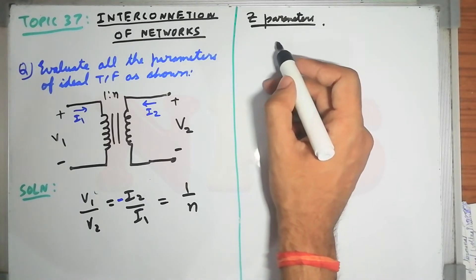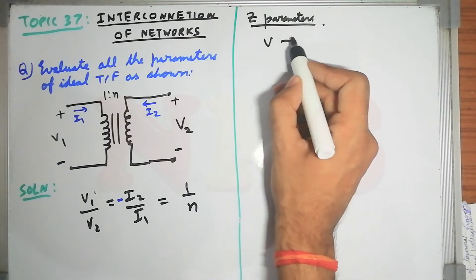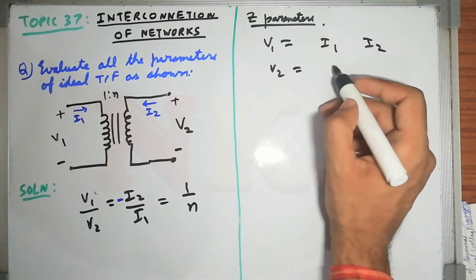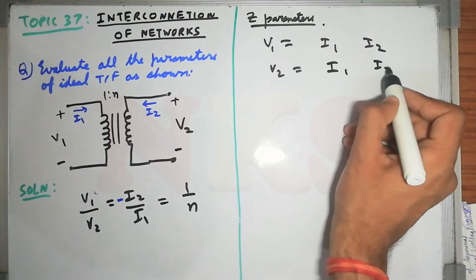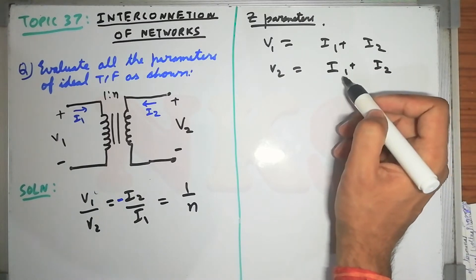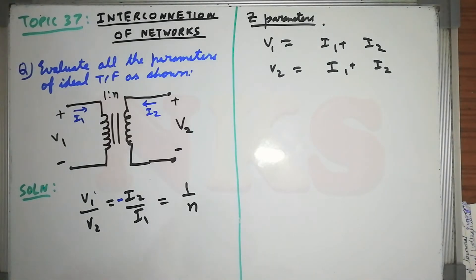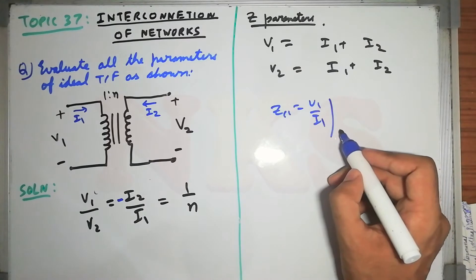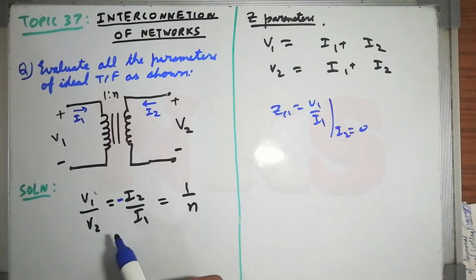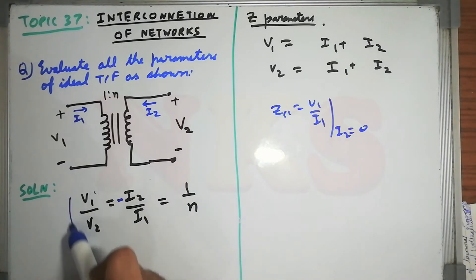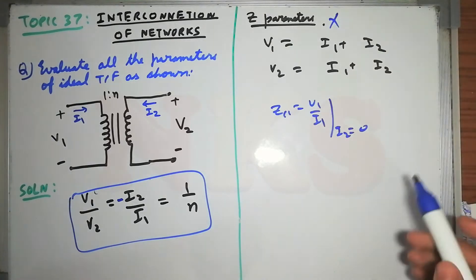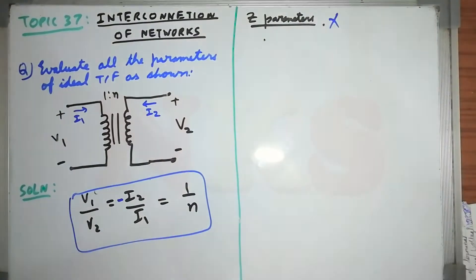For Z parameters, recall the equation: v1 and v2 are expressed in terms of i1 and i2. Here we cannot find any expression like z11 = v1/i1 when i2 = 0, because we only have the transformer relation and cannot manipulate it to find this parameter. So Z parameters do not exist for the ideal transformer. Similarly, Y parameters also do not exist.